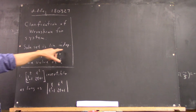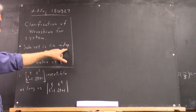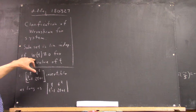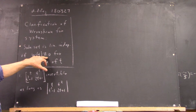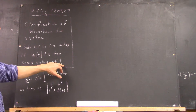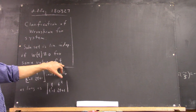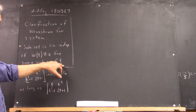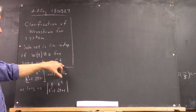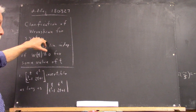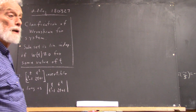But basically, your solution set is linearly independent if the Wronskian is non-zero for some value of t. If it's non-zero for any value of t, then you have a linearly independent solution.